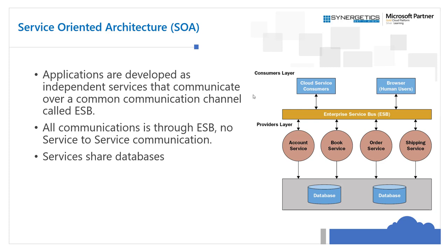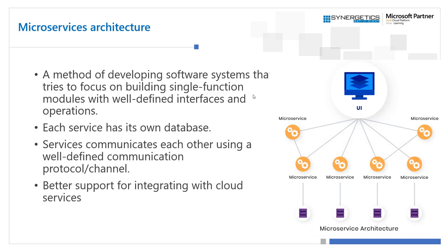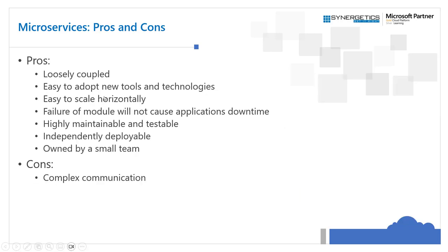If the enterprise service bus is not available or its availability goes down, the applications completely go down. When it comes to microservices architecture, we are building services as individually deployable units, which each have their own database. There is no restriction in communication — services can communicate with each other using well-defined endpoints, mostly REST APIs, or using message-based or event-based communications.